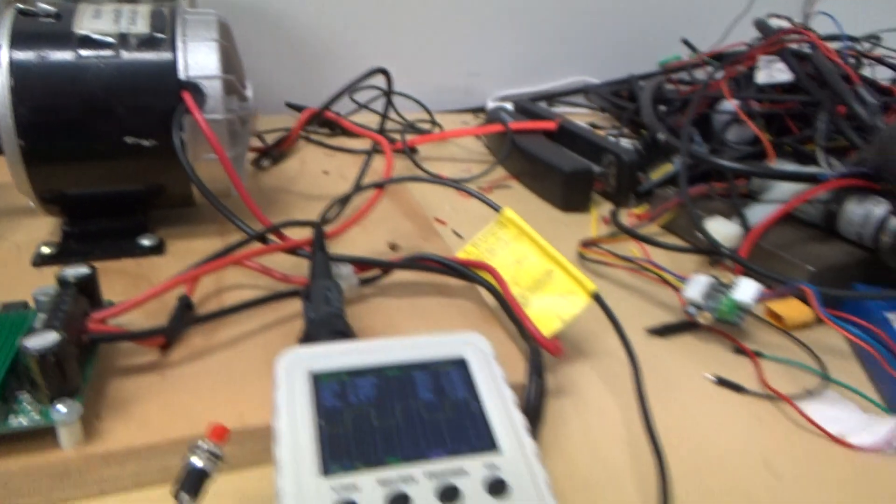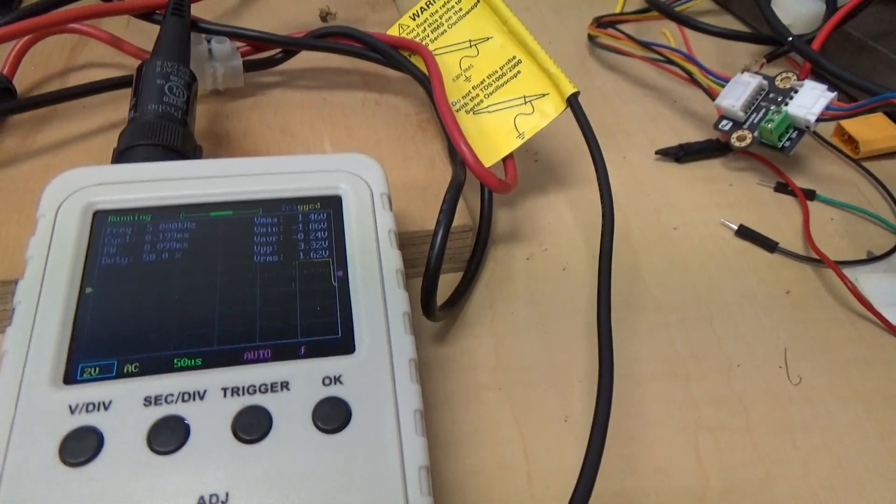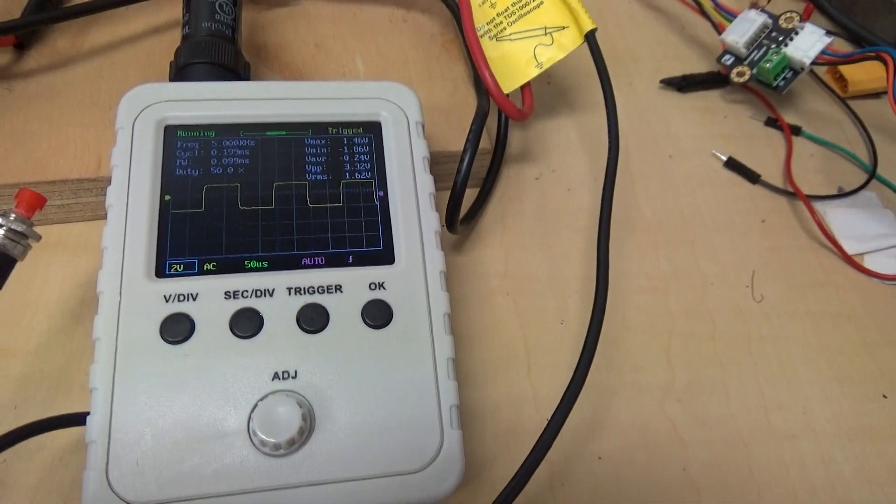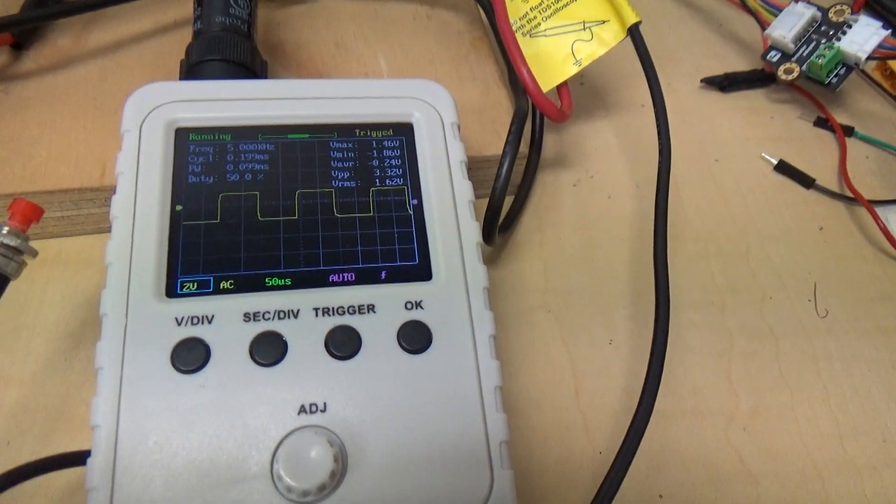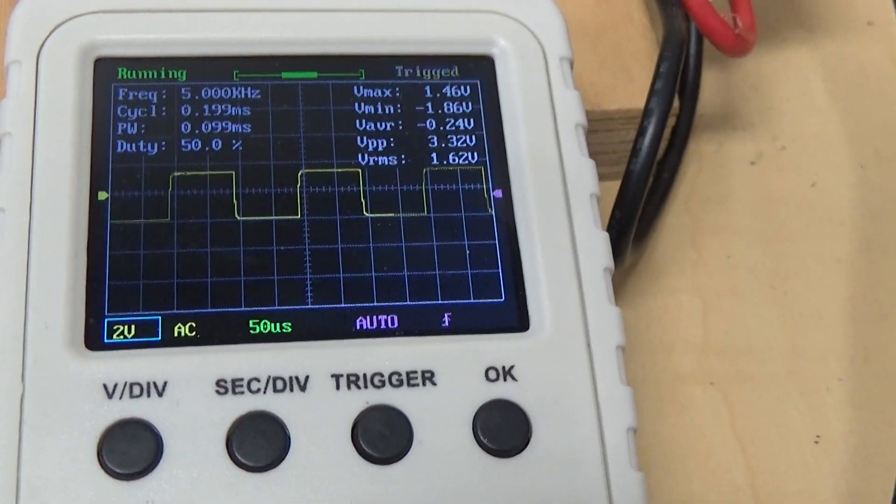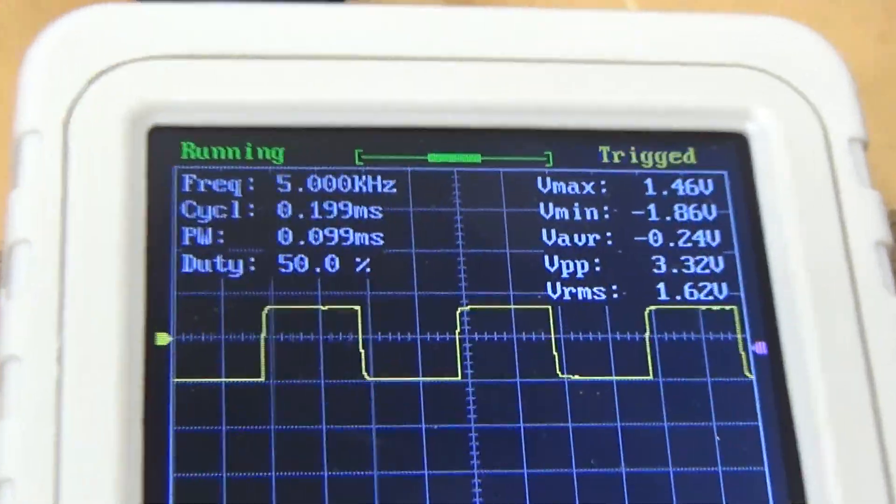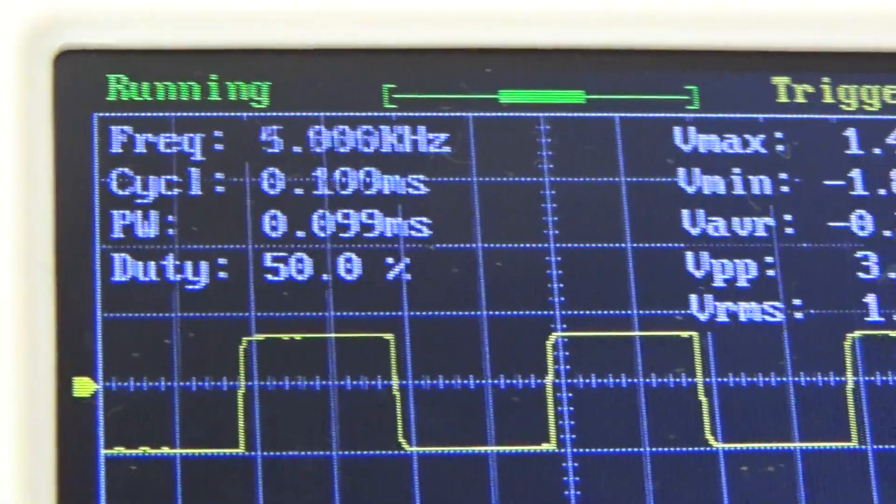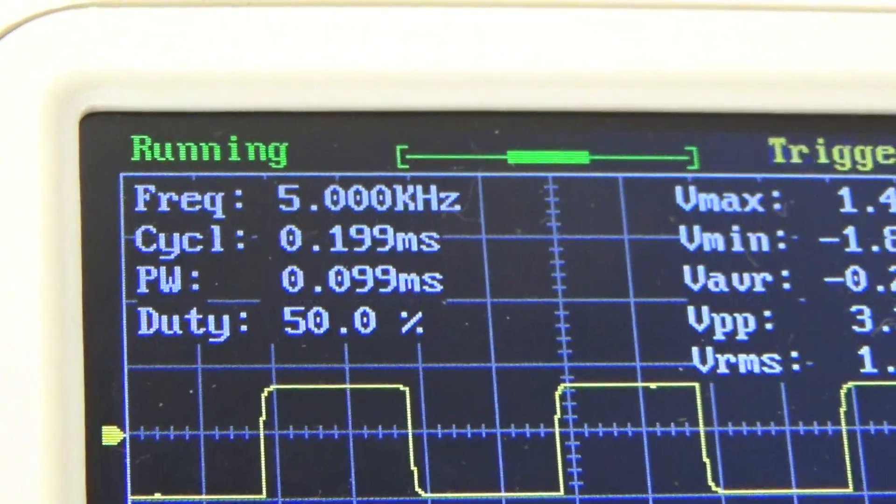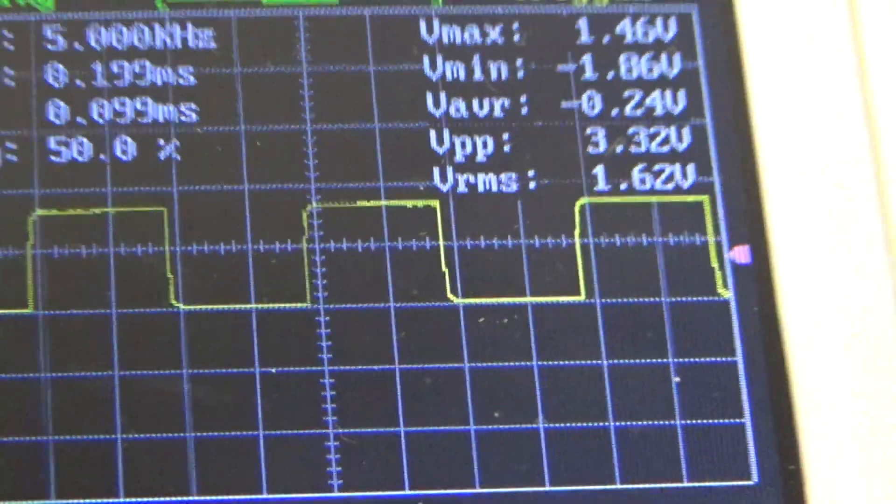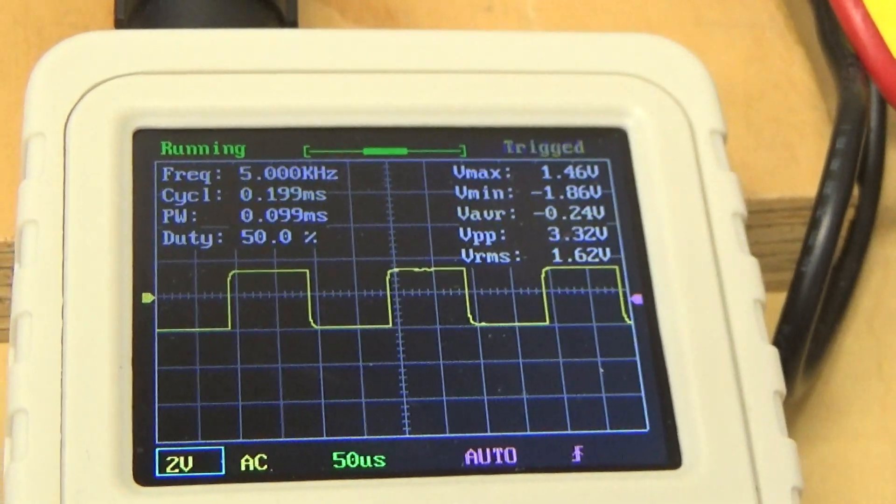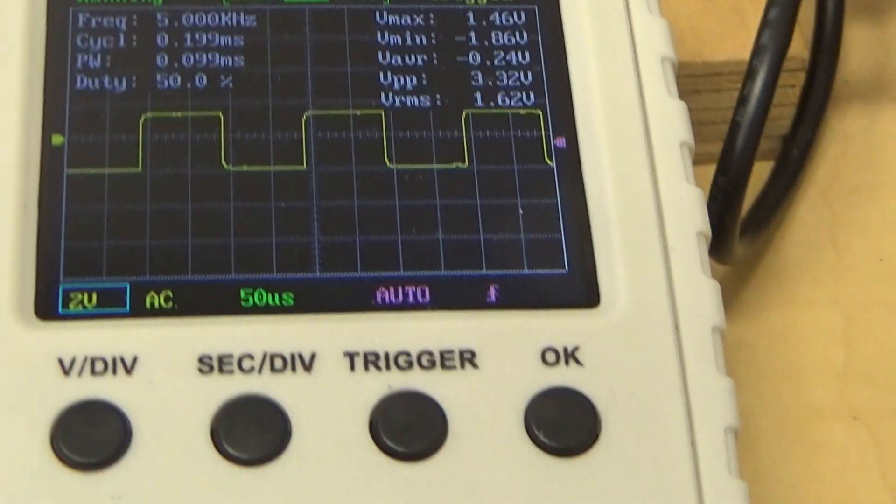And I've got one of these really nice new little tiny oscilloscopes just to show you. I've got the proper scope, but I thought I'd show you this if you can see it. You can see that square wave there. If you read the frequency, it says 5.000 kHz, and that corresponds very closely to the big scope, so it's quite accurate.